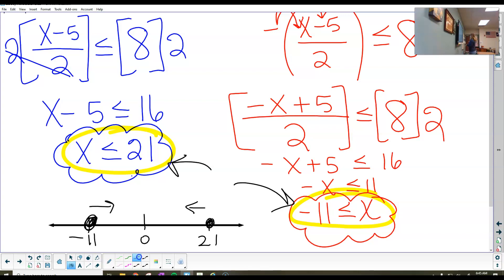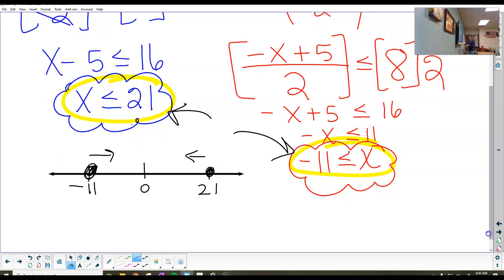So to put this in interval notation form, all we're going to do is write negative 11 with our bracket. And remember, it goes all the way to 21 with a bracket. So this is going to be the answer that satisfies the inequality and makes it a true number sentence.